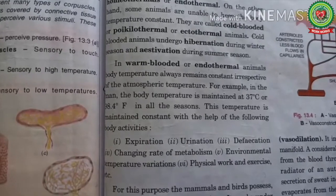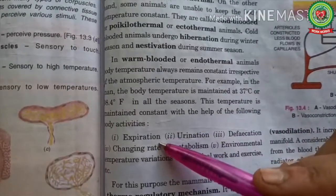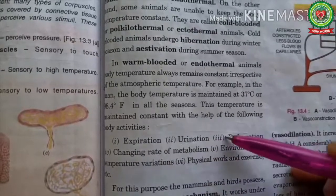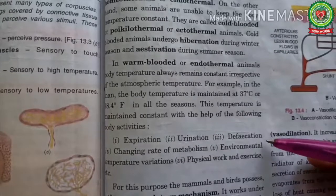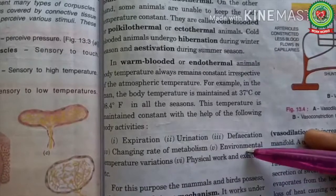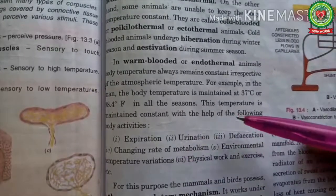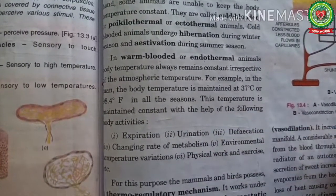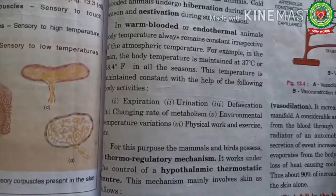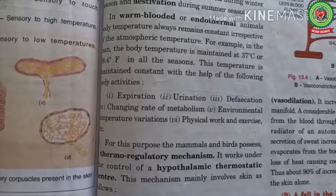This temperature can be maintained with the help of various body activities: expiration — removal of foul air from the lungs; urination — removal of urine; defecation — removal of feces; changing rate of metabolism; environmental temperature; radiation; and physical work and exercises. A thermoregulatory mechanism controlled by the hypothalamus in the brain is responsible for this regulation.